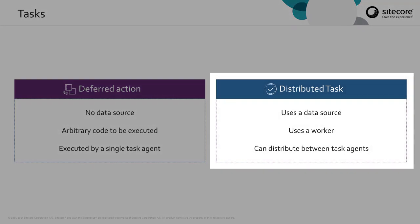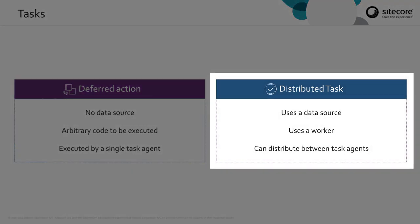A distributed task, however, uses a data source and can be distributed across a number of different task agents. The ability to distribute the distributed task does depend on the data source, so as long as the data source supports splitting, then the task can be distributed.